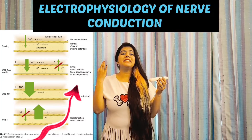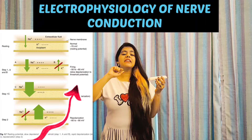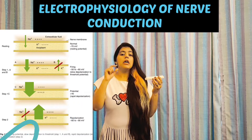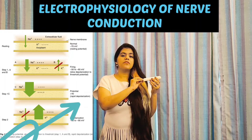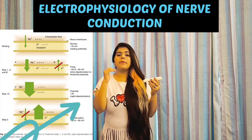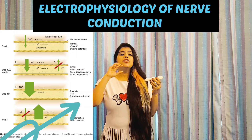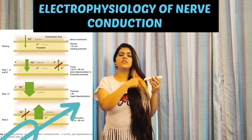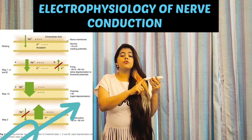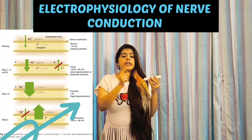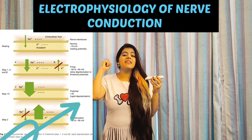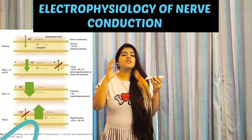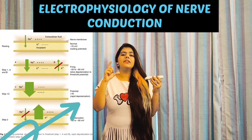The third step is the rapid depolarization of the nerve. In this step there is a total reversal of the electrical potential of the nerve. Inside the nerve, in the case of rapid depolarization, we have a positive electrical potential compared to the outside of the nerve — it reaches up to plus 40 mV. Earlier it was -70 mV, and now it is +40 mV.